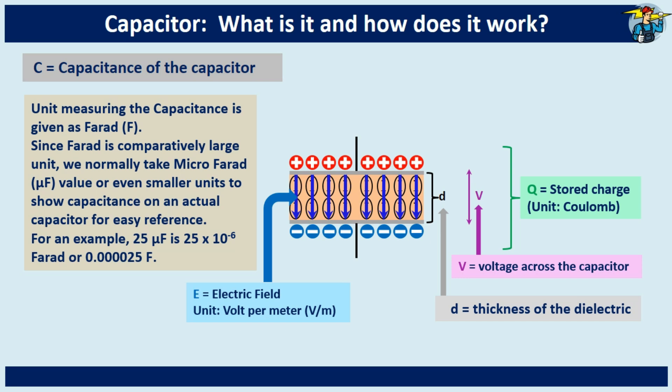Since farad is a comparatively large unit, for ease of reference we usually take the value of microfarad or even smaller units to show capacitance. For an example, 25 microfarad is 25 multiplied by 10 to the power minus 6 farad, or 0.000025 farad.